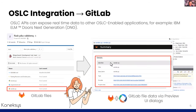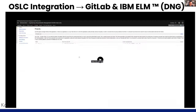Let's take that previous example and show a live demo of this integration. We have a file containing a specific GitLab repository which we want to link to a DNG requirement. By using the OSLC API integration, it is possible to link this file and expose a brief summary of the GitLab file using the preview UI dialogues provided by the OSLC API.